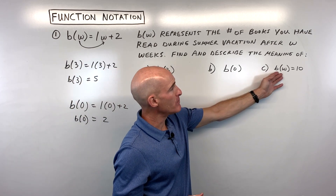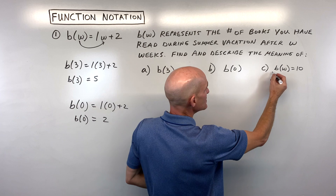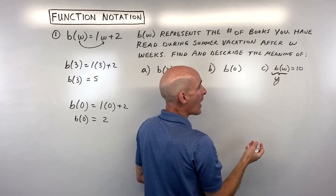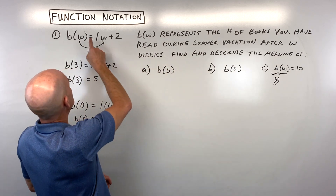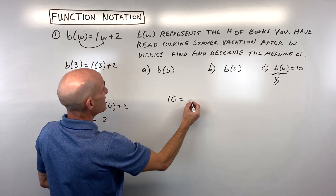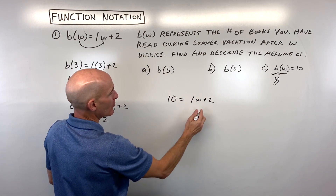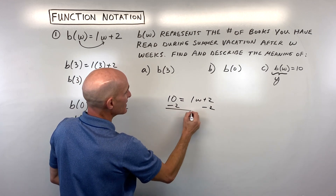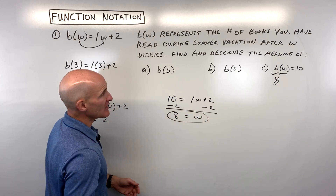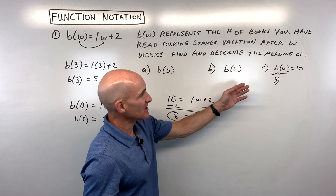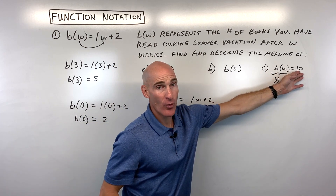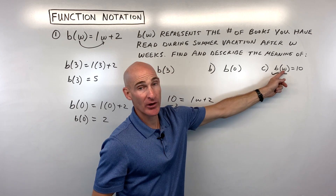For part C, B of W equals 10. Remember, B of W is like our y value or output, so we set 10 equal to 1W plus 2. Subtracting 2 from both sides, we get W is equal to 8. That means after eight weeks, we'll have read 10 books. Here they're giving us the output and we're solving for the input — the number of weeks.